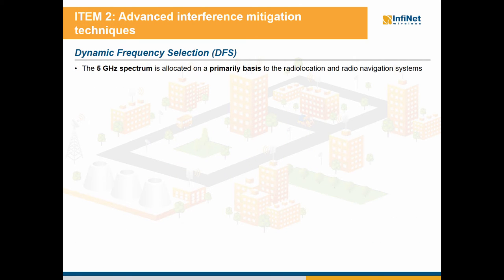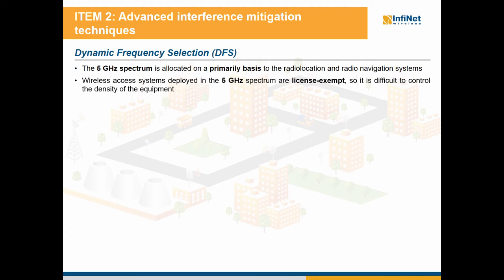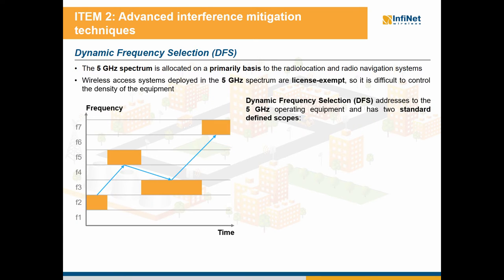Let's now move forward and review the interference mitigation techniques available for the Infinite Wireless units. We'll begin with the powerful interference mitigation technique which is DFS, or dynamic frequency selection, available for the 5 GHz spectrum that is allocated on a primary basis to the radio location and radio navigation systems. As wireless access systems deployed in the 5 GHz spectrum are license exempt, it is difficult to control the density of the equipment.